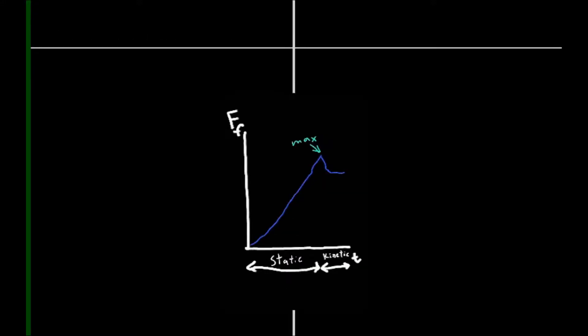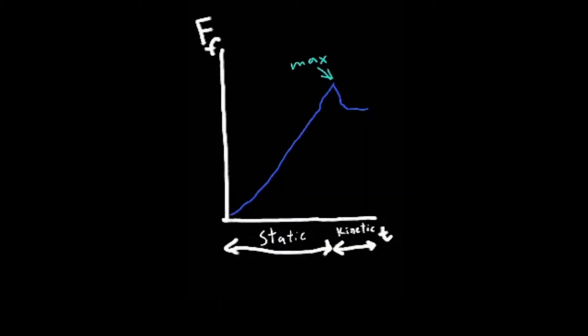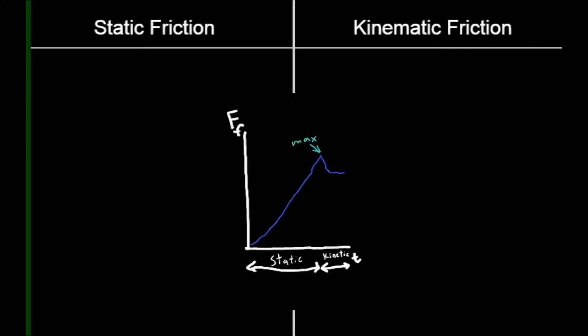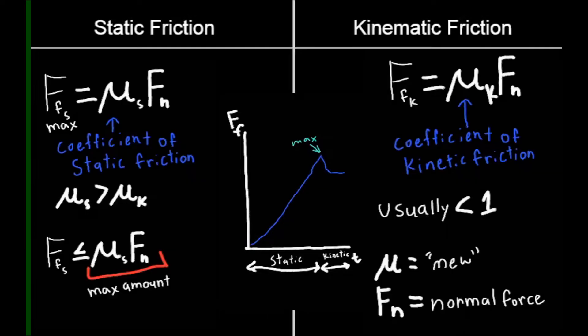Here we have the two different types of friction: static and kinematic. Static friction is the friction that the object is experiencing when it is at rest, even when something is pushing at it. Kinematic is when the static friction has reached a maximum point and thus is now moving.